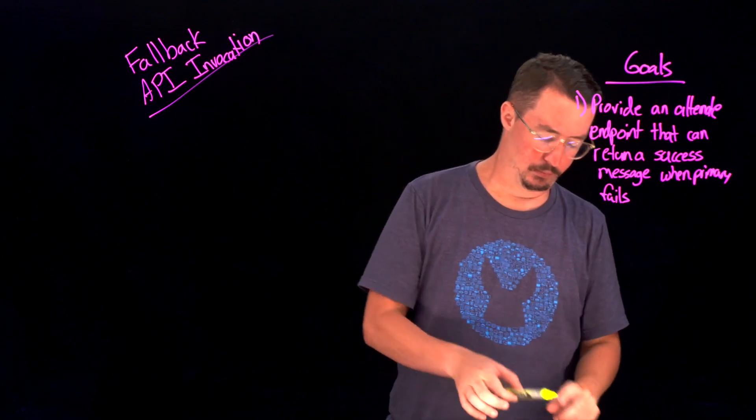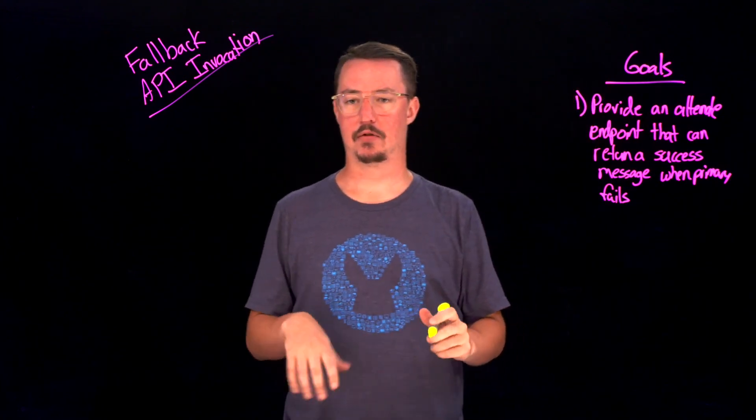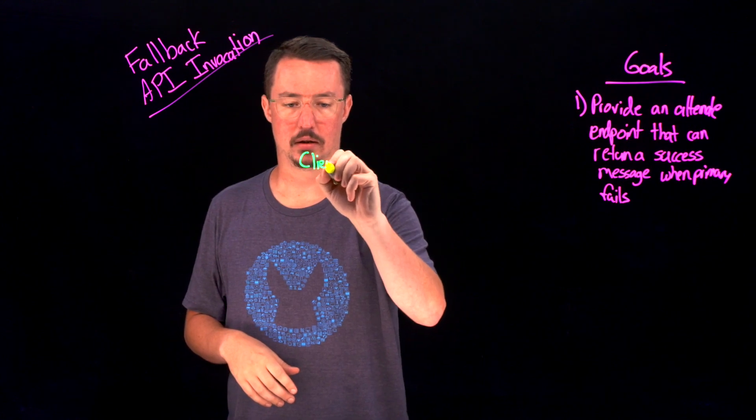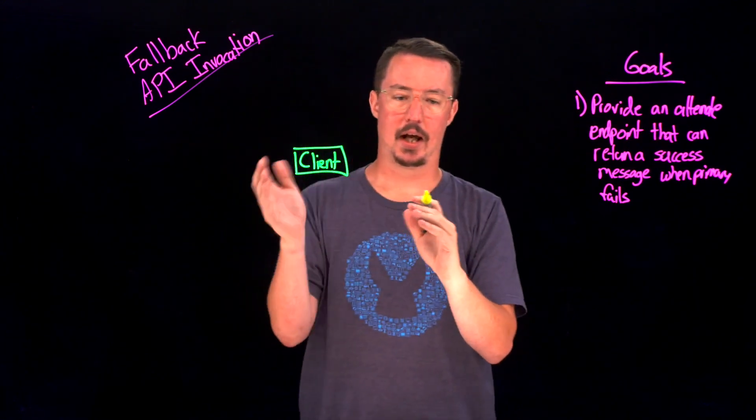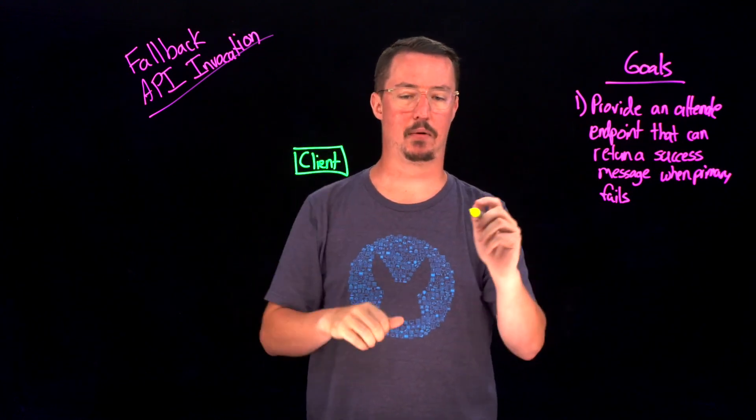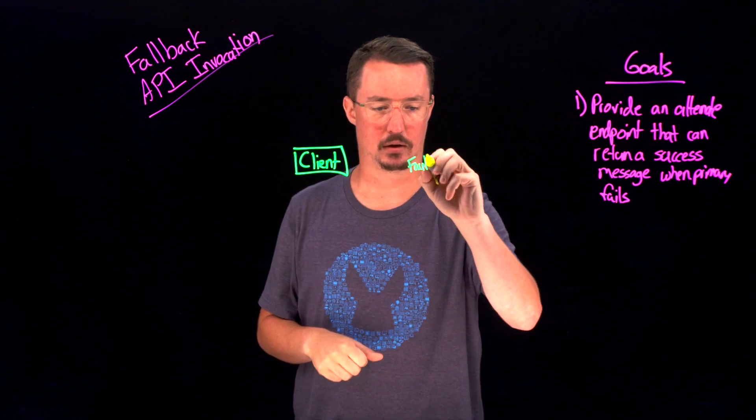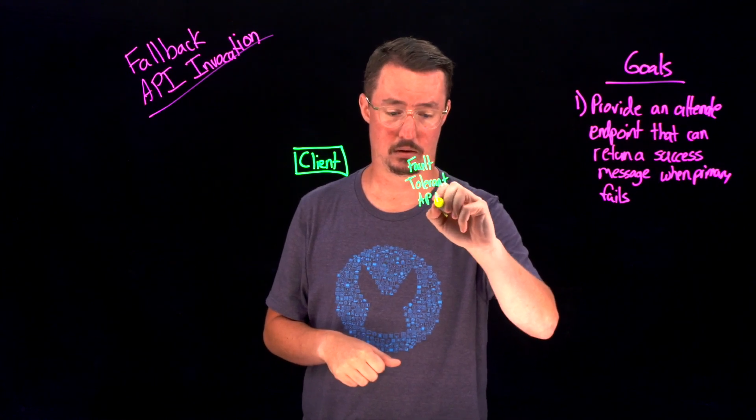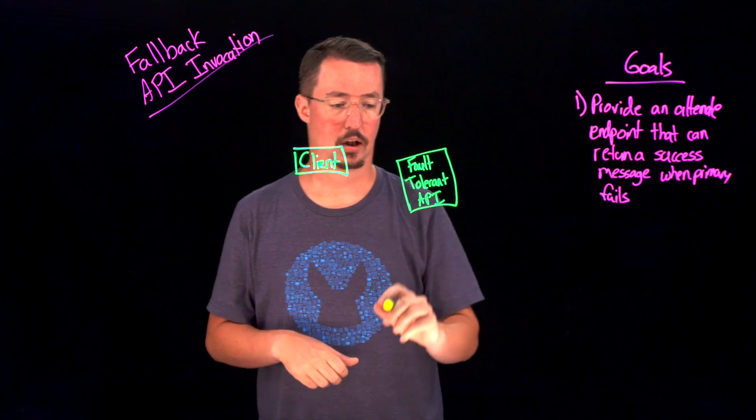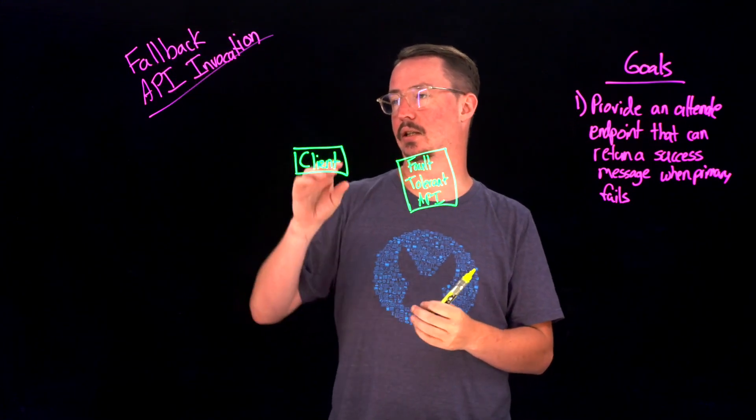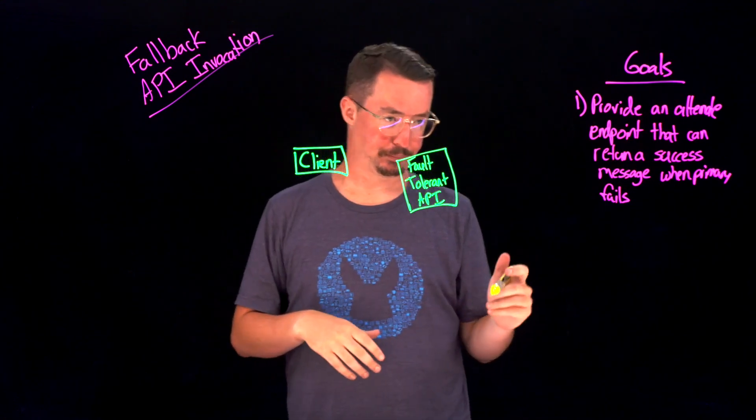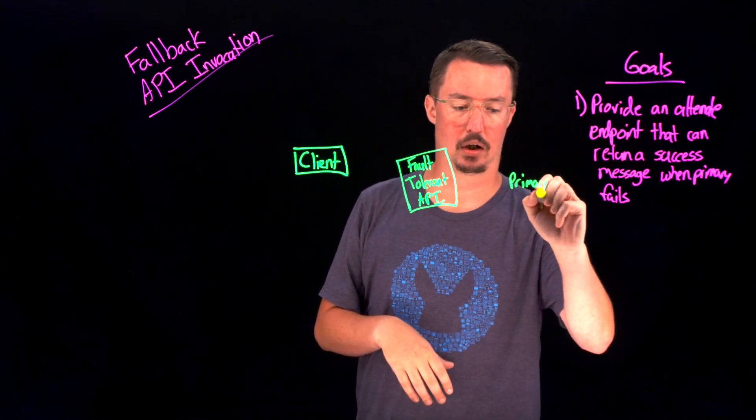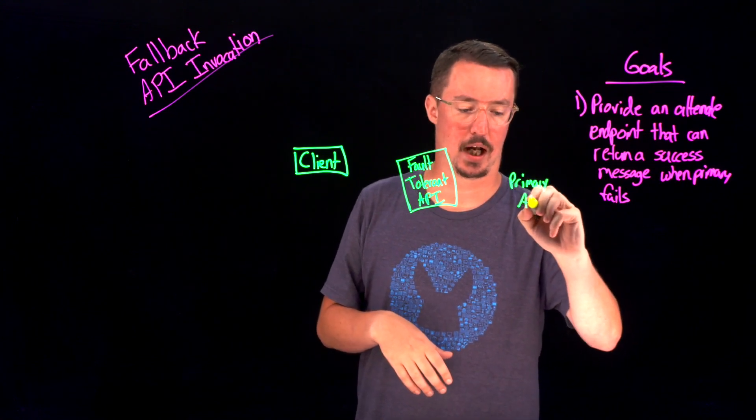So what does that look like in practice? Essentially what we're going to need is three different aspects. We're going to have our client, which is who's going to be calling our API. We're going to have in between the client and the actual API implementation a fault-tolerant API. This is the API that's actually going to invoke the fallback API policy. And then finally, we're going to have our primary API. This is going to be the one that we call most of the time, the one that has the true functionality.